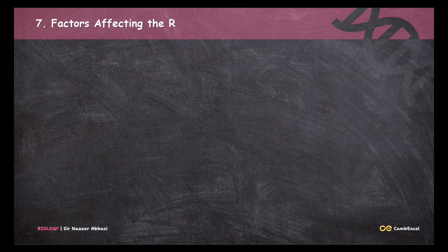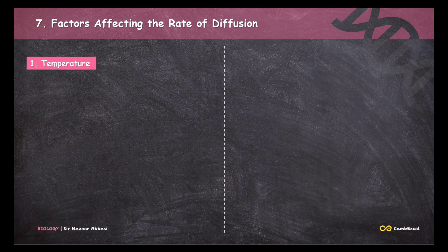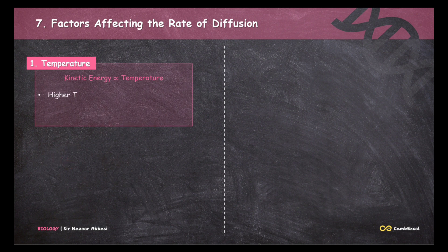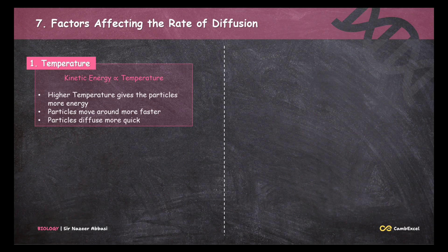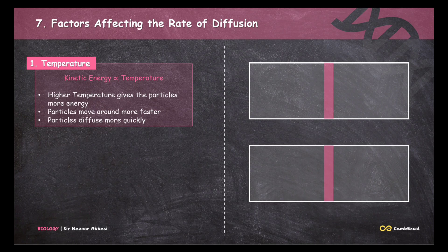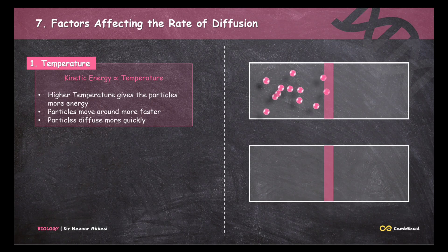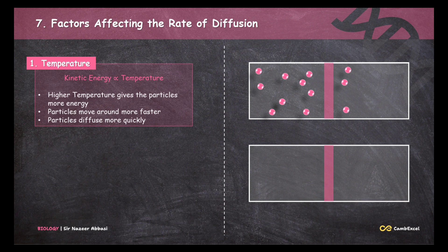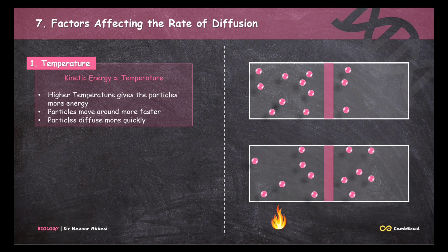Next, we will see the factors affecting the rate of diffusion. The first factor is temperature. As you also learned in chemistry, the kinetic energy of a moving molecule is directly proportional to temperature. Higher temperature gives particles more energy, so they move faster and diffuse more quickly. For example, particles at room temperature will diffuse normally, whereas particles at higher temperature will move with more speed and more particles will diffuse from the area of high concentration to the area of low concentration.